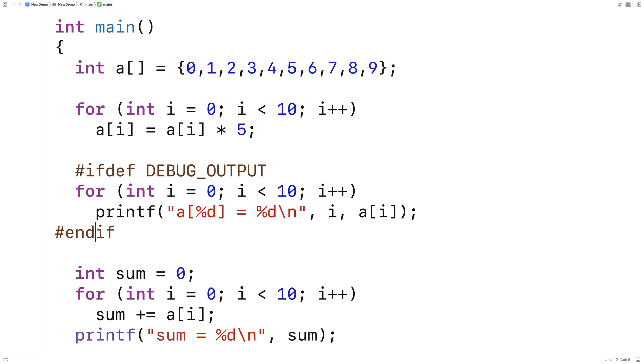These are both preprocessor directives because they're going to run before our program is compiled. They're actually a pre-compilation step in the compilation of a C program. What we're doing here is saying if the constant DEBUG_OUTPUT is defined, include this in the source code that's compiled. Otherwise, do not.